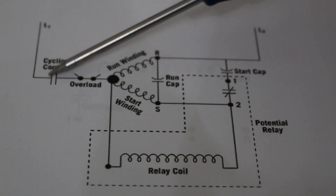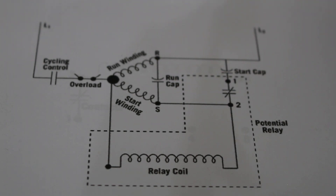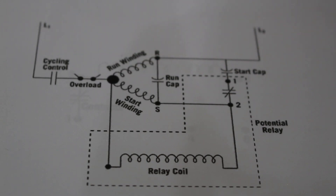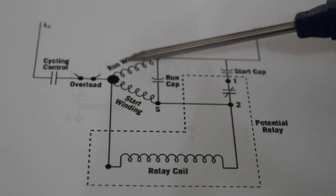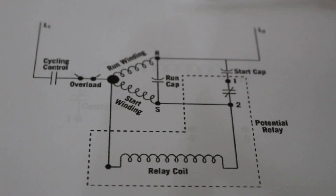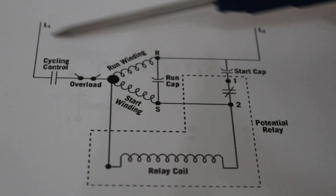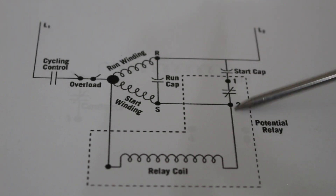Here we have line 1 and line 2. Power is going to come in through a set of normally open contacts labeled as cycling control — this can be our thermostat. Once this calls for cooling, these contacts will close and allow power to pass through. Next is our overload — a thermal overload. If our compressor overheats, this will open and cut power to our compressor to save it. As power passes through, it's going to energize our relay coil, and since we have a normally closed set of contacts, it will continue to pass through.